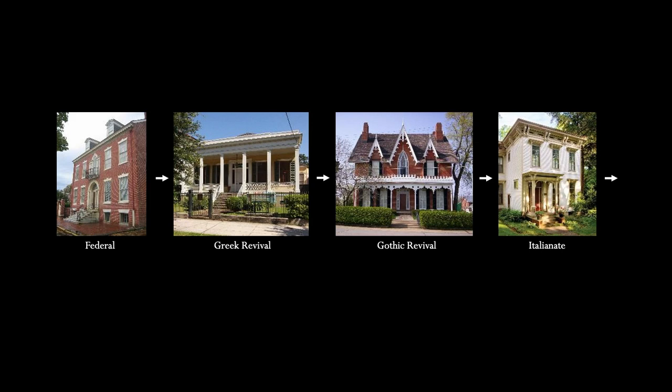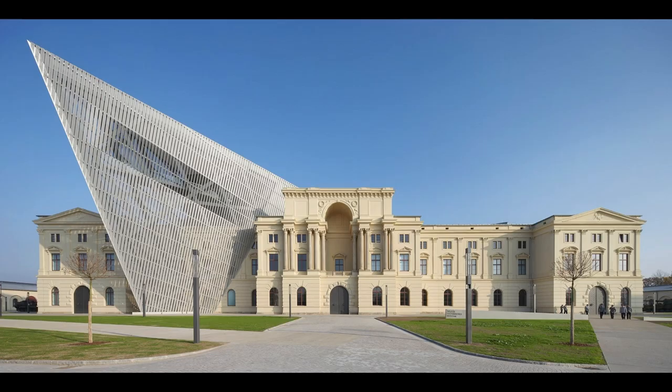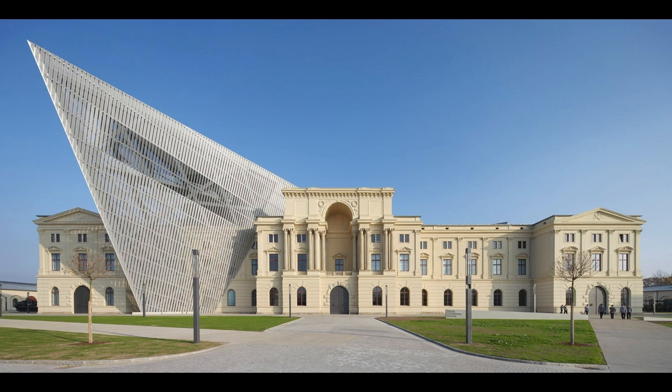This approach can affect what we choose to preserve, often giving preference to great examples of a specific period and not to other structures that can have significant features architecturally or to a community, especially non-elite communities. This approach can also affect what we choose to build today, especially in historic areas, asking for new buildings or additions to read more from our time than of the past, differentiating them in character from nearby historic fabric. Or, on the other extreme, if someone chooses to design in a so-called historical style, they may be compelled to fully epitomize the style rather than expand it.